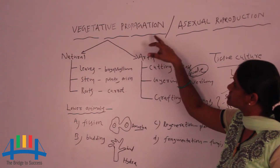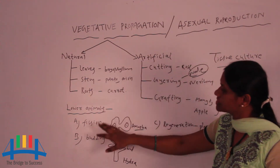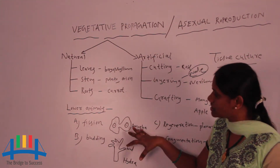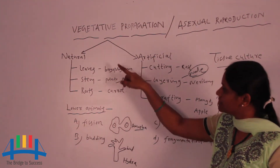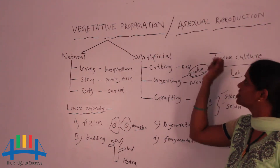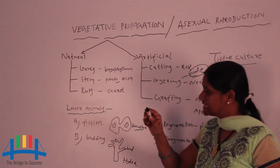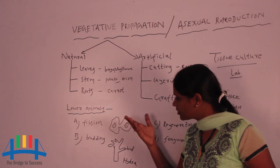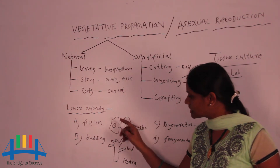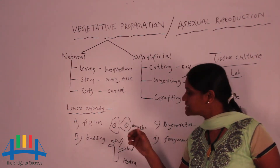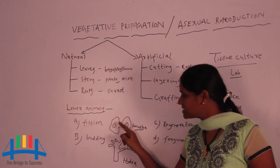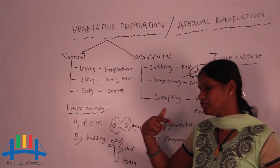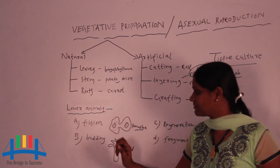Vegetative propagation or asexual reproduction is also observed in lower animals like amoeba and hydra. They produce new individuals by asexual reproduction. The first method is fission — in unicellular or multicellular organisms, one nucleus divides into two nuclei. In amoeba, through the process of fission, new daughter amoebas are produced.